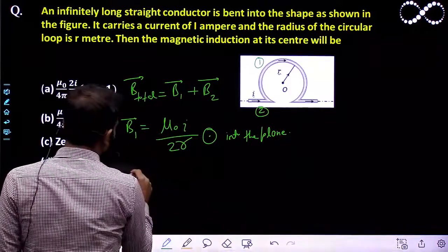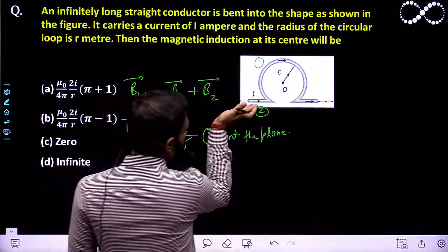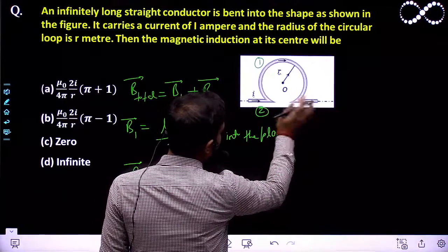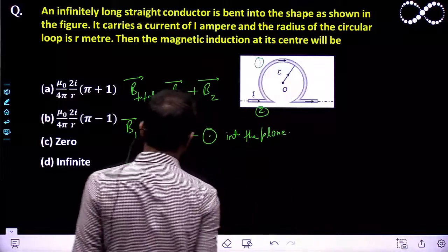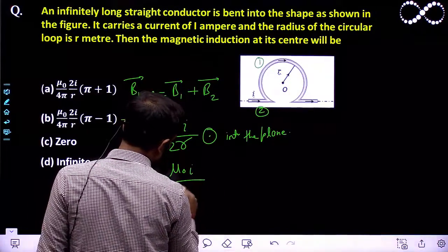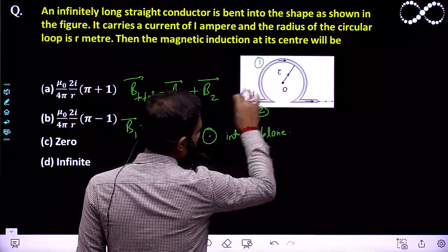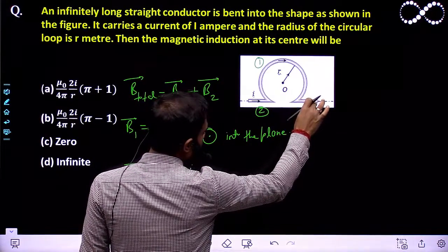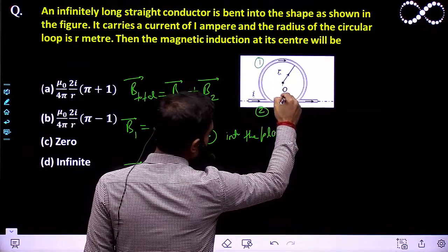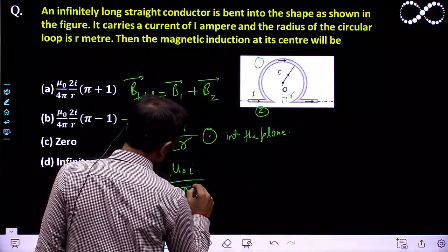Now for B2 vector — the second part is the straight infinite conductor. Due to this infinite straight conductor, the magnetic field will be μ₀I upon 2π times the distance from the center. That distance is R, so B2 = μ₀I upon 2πR.